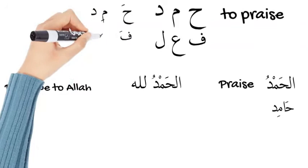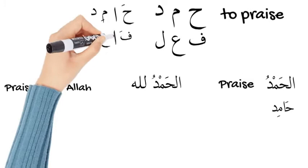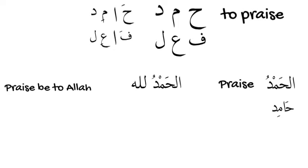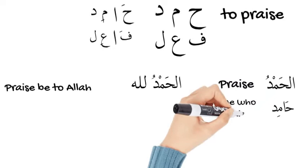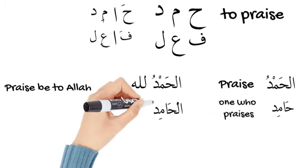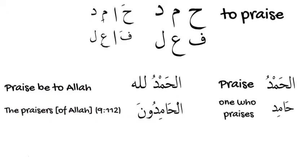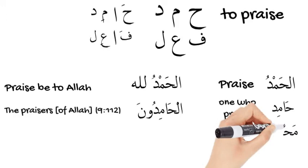Hamid has the same pattern as fa'il. Hamada is fa'ala, and if we add an alif after the first letter — after ha — it's the same as adding a letter after fa. Fa'il is the doer, the person who does the verb or does the action. Hamid is the one who does the praise — the one who praises. An example in the Quran would be al-hamidun, which is the plural of al-hamid, meaning the praisers of Allah. That is in Surah Al-Tawbah, ayah number 112.